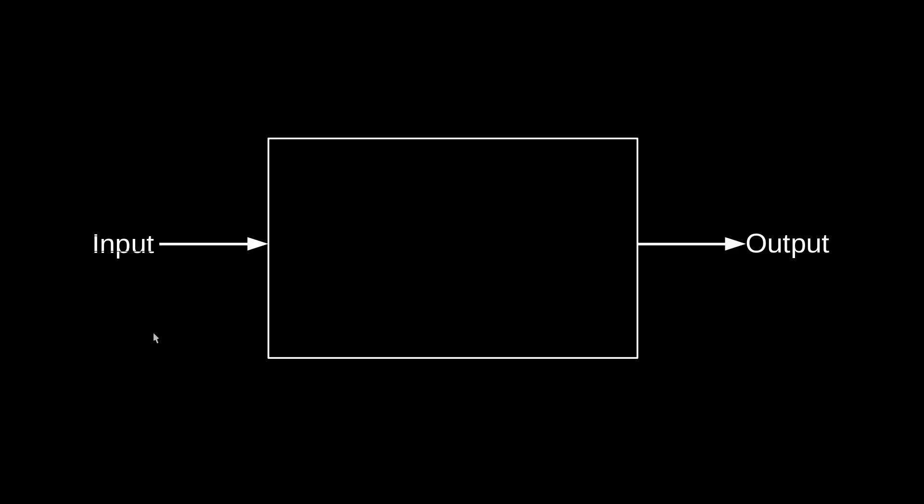Without further delay, let's see what a program constitutes of. Any program in this world will constitute of three basic things: input, a black box which we will be talking about in a bit, and an output. The input to a program is nothing but a problem statement. The problem statement could be as simple as adding two numbers, such as a plus b. Now this problem statement is given into a black box, which is nothing but an algorithm running in our program.